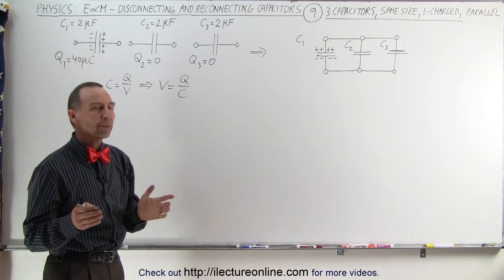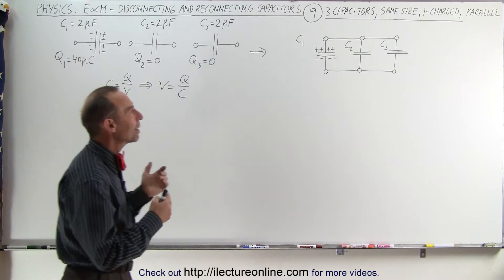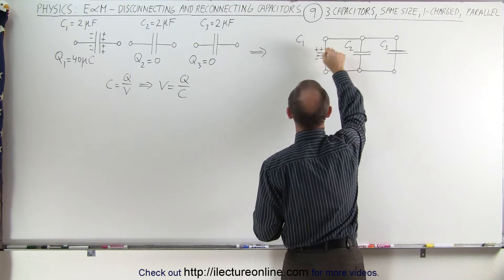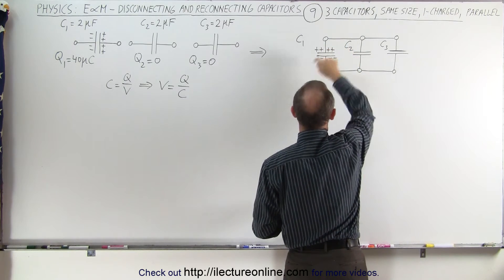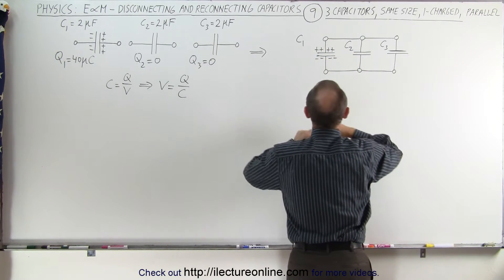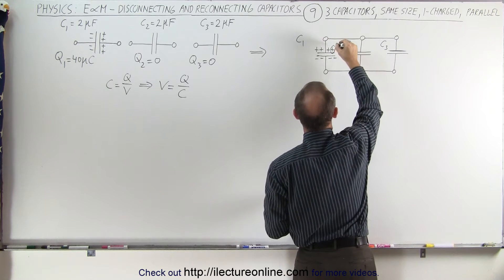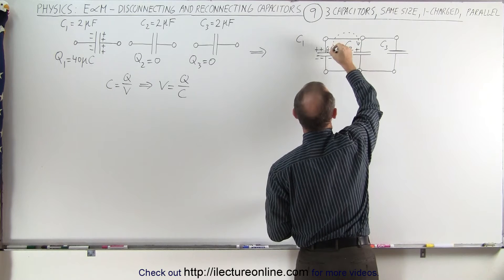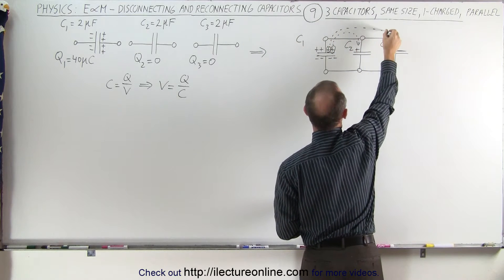So what does it look like when we connect these capacitors in parallel? This is what it will look like. Here's what we start with: all the charge on one of the three capacitors. It won't take long before the charge will start moving from here onto this capacitor here, and from this charge onto this capacitor there.